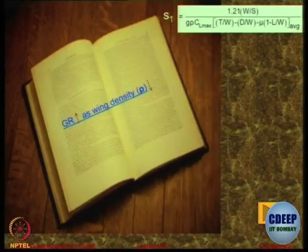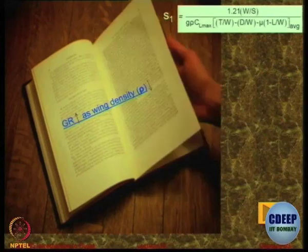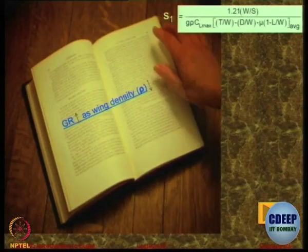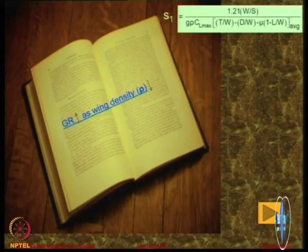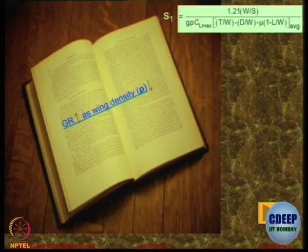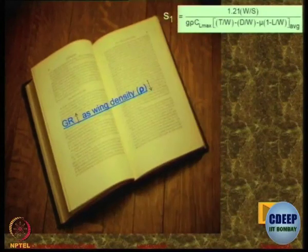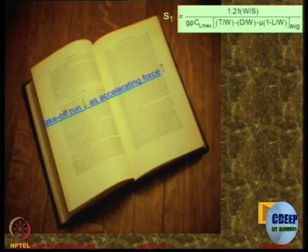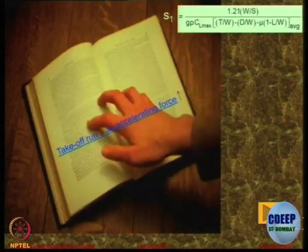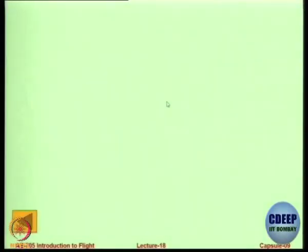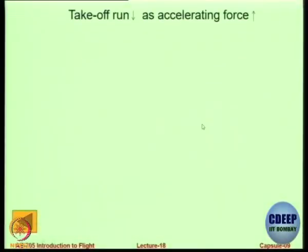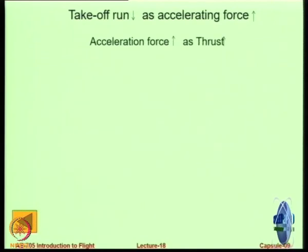At a hot-and-high airport where density is low, the takeoff run is significantly longer. Examples include Leh airport in India during summer — one of the most difficult airports to operate due to hot and high conditions — and Denver in the USA. Takeoff run also decreases as the net accelerating force (T − D − μW) increases, so faster acceleration means a shorter ground run.